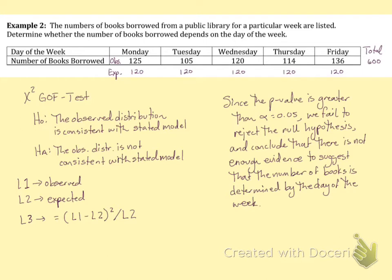If you do that right, then in that column under L3 you should have 0.2083, 1.875, 0.03, and 2.1333.